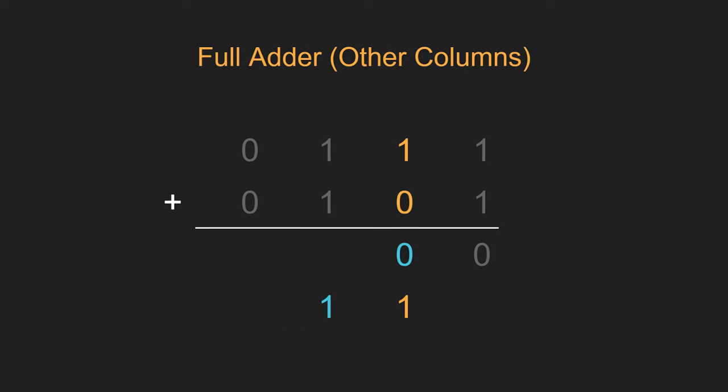Now, all the other columns from the second column along onwards, you need to use a full adder because we've got the A and the B, the two digits that we're adding together. Plus, we've also got that carry over from the previous column. And again, we've got two outputs.